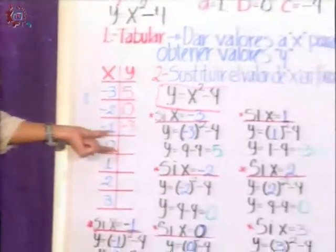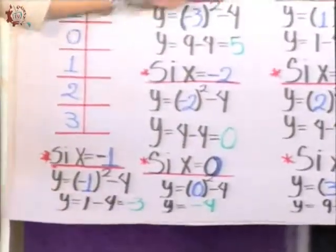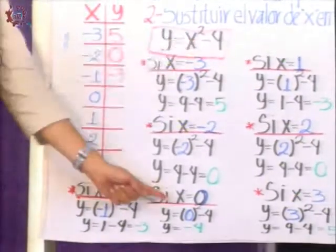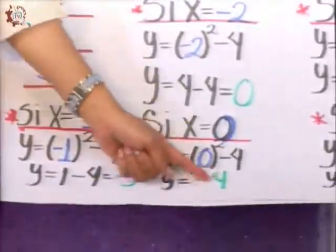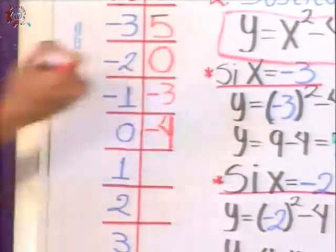Now, I need the value for 0. If x is 0, I substitute in this same function, and in place of x, now I will put 0. 0 al cuadrado is 0, so I only have minus 4 left. Therefore, here, the value of y is minus 4.